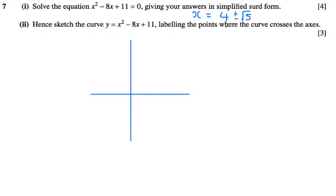It's going to cross the x-axis at 4 plus root 5 and 4 minus root 5. But where are they on the x-axis?